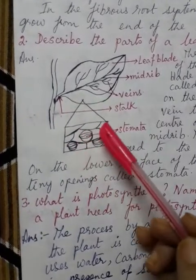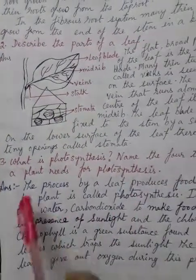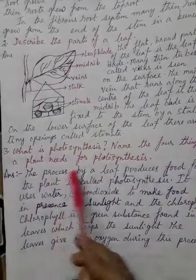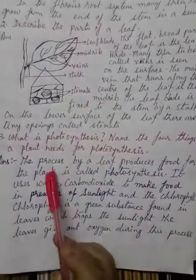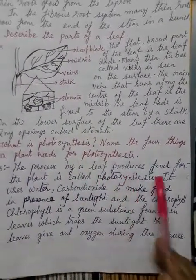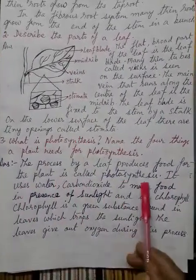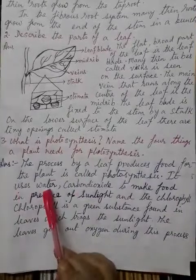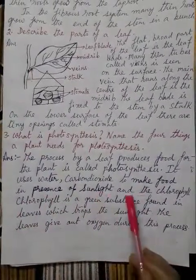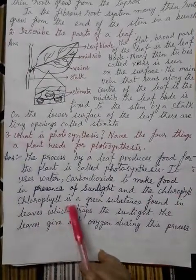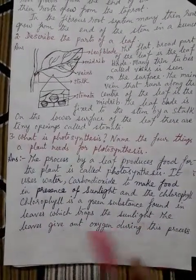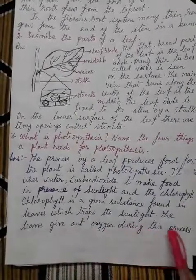The next question says: what is photosynthesis? Name the four things a plant needs for photosynthesis. The process by which a leaf produces food for the plant is called photosynthesis. It uses water and carbon dioxide to make food in the presence of sunlight and chlorophyll. Chlorophyll is a green substance found in leaves which traps the sunlight.